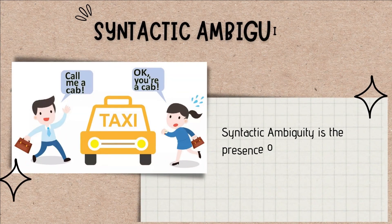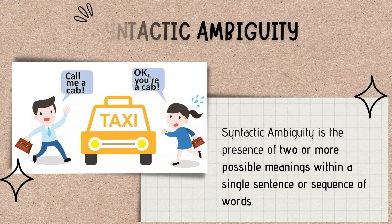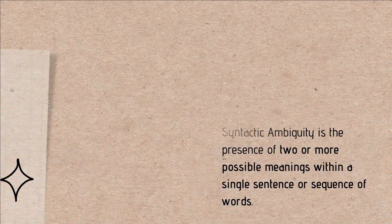Second, syntactic ambiguity is the presence of a word with two or more possible meanings within a sentence or sequence of words. For example, if a person says 'call me a cab,' another person might say 'okay, you are a cab,' whereas the first person wanted to call a cab instead of being called by that name.